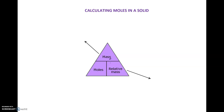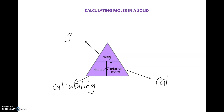This line here means divide; this line here means multiply. The mass will be given to you in grams. If it is given in kilograms, you will have to convert it. Number of moles is what we will be calculating today. Relative formula mass is something you have to calculate using your periodic table, which I showed you how to do in a previous video.